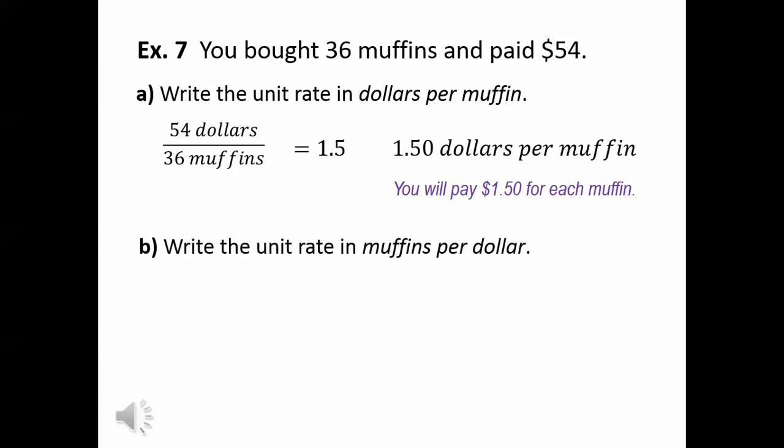Part B. We want to write the unit rate now in muffins per dollar. So that means the 36 muffins goes in the numerator and the $54 goes in the denominator.